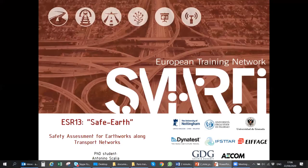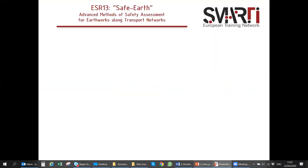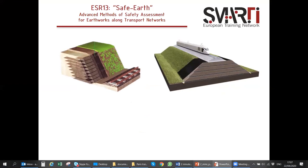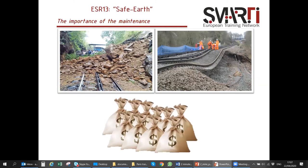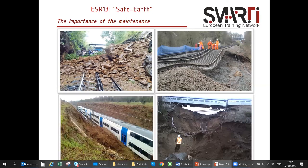I'm Antonino Scalia, a PhD student in Civil Engineering, and my research is about the safety assessment for earthworks along transport networks. In Ireland and the UK we have the oldest infrastructure networks in Europe, and the cost for maintaining this infrastructure is about 50 million euros per year. However, this is nothing compared to the cost of emergency repairs in case of failures, which can be up to 10 times greater than the cost of continuous planned maintenance — and sudden failures involving transport infrastructure can be extremely dangerous for users.